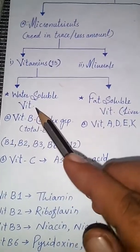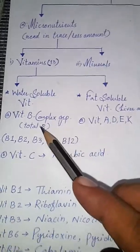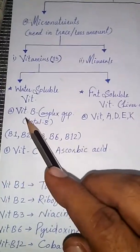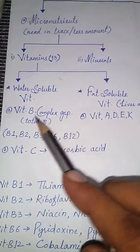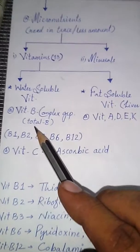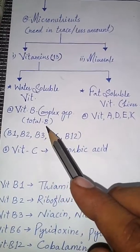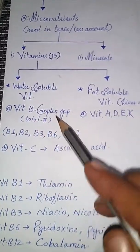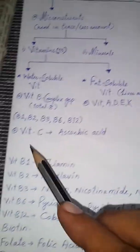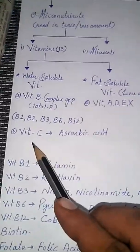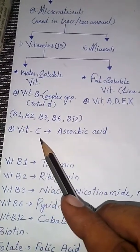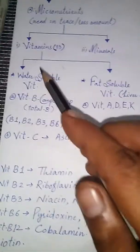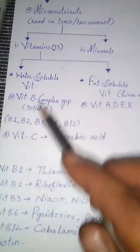Water soluble vitamins are divided into only two parts: the vitamin B complex group, which has a total of eight vitamins, and vitamin C. So these are the two types of water soluble vitamins.